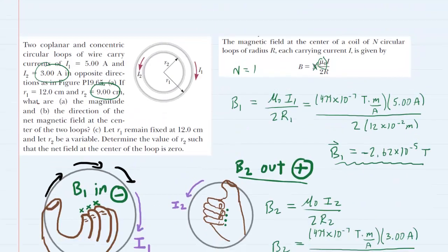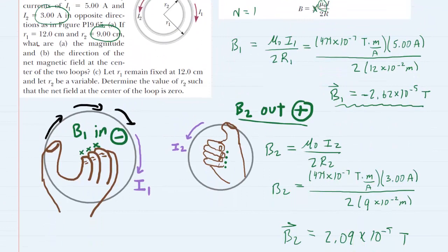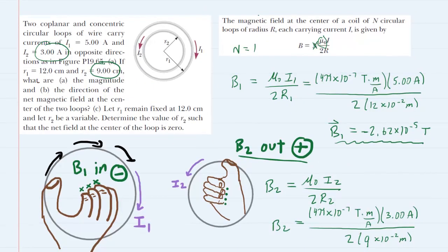Let's take a look at part C. It says let R1 remain fixed at 12 centimeters and let R2 be variable. Determine the value of R2 such that the net magnetic field at the center of the loop is zero. In this case it looks like R2, the radius of the smaller loop, can be flexible. We can either shrink or expand its size, but what we definitely want to make sure is that the net field is zero.